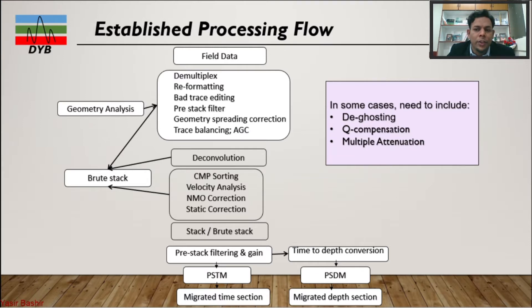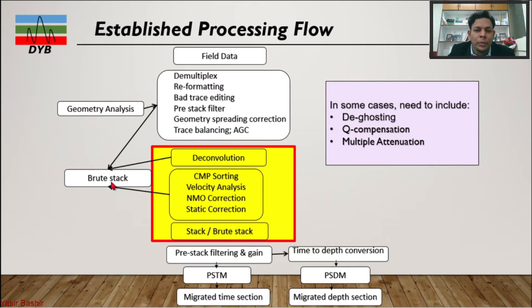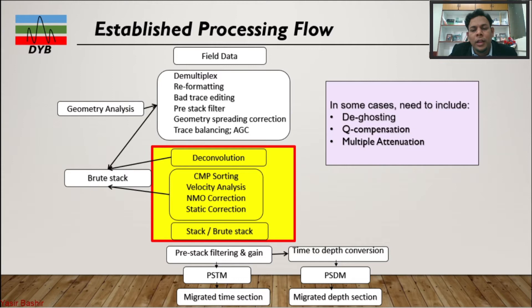Now in this part of the video series, we are focusing on deconvolution, CMP sorting, velocity analysis, NMO correction, and brute stack. The brute stack can be obtained after deconvolution, or even before, or after applying all the main processing. We are also covering deconvolution, Q compensation, and multiple elimination or attenuation, some of which are necessary and some are not.